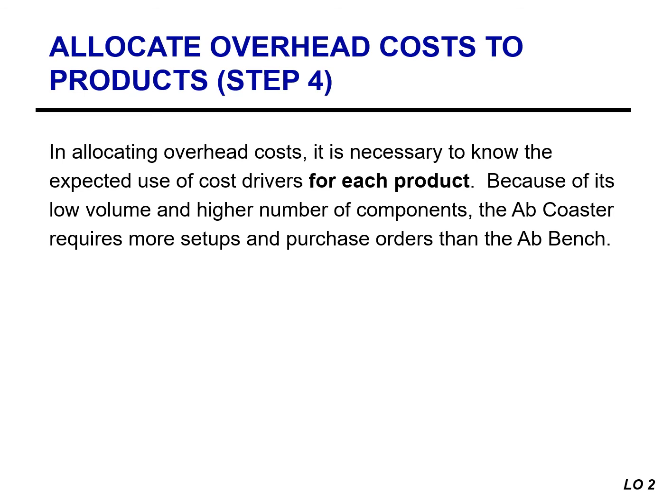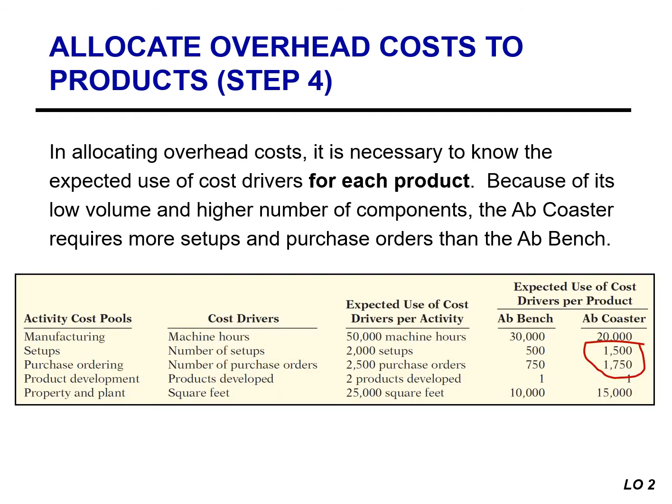In step four, we simply allocate overhead cost to products. The company must know the expected use of cost drivers for each product. Because of its low volume and high number of components, the ABB Coaster requires more setups and purchase orders than the ABB Bench. Atlas multiplies the activity-based overhead rates from step three by the number of cost drivers expected to be used per product. For the manufacturing activity cost pool, the activity-based overhead rate is $10, multiplied by 30,000 machine hours for the ABB Bench, and by 20,000 machine hours for the ABB Coaster.